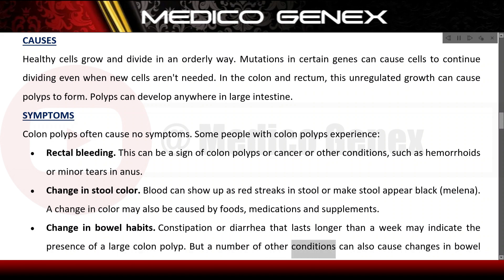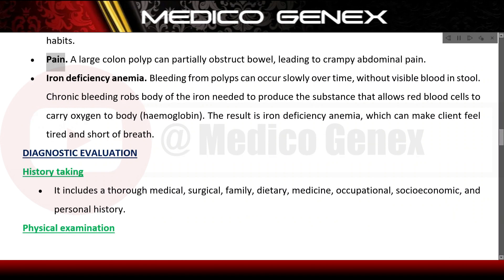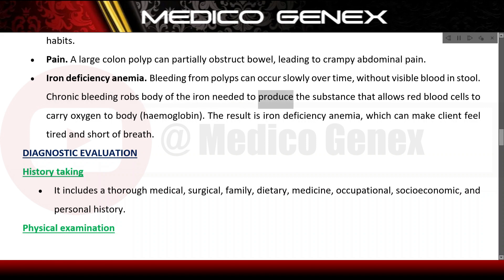A number of other conditions can also cause changes in bowel habits. Pain: a large colon polyp can partially obstruct the bowel, leading to crampy abdominal pain. Iron deficiency anemia: bleeding from polyps can occur slowly over time without visible blood in stool. Chronic bleeding robs the body of the iron needed to produce hemoglobin, the substance that allows red blood cells to carry oxygen to the body. The result is iron deficiency anemia, which can make the patient feel tired and short of breath.